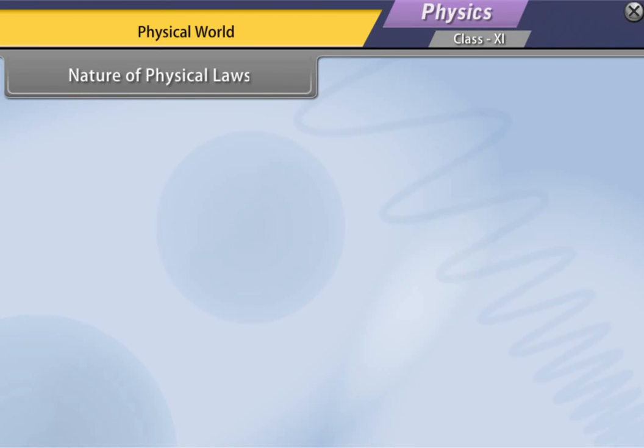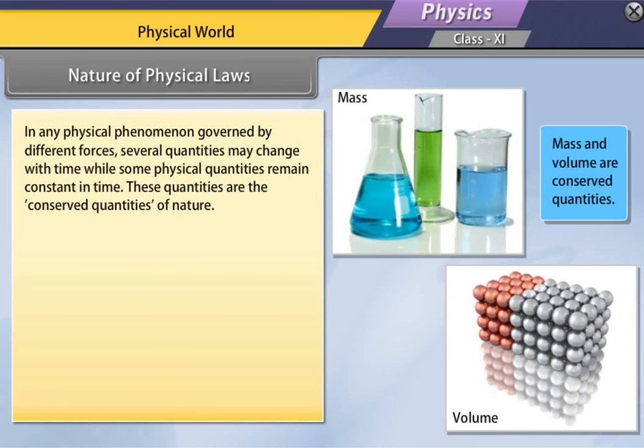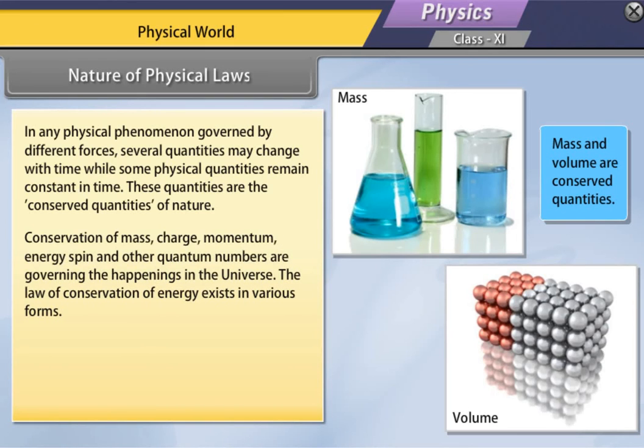Nature of physical laws. In any physical phenomenon governed by different forces, several quantities may change with time while some physical quantities remain constant in time. These quantities are the conserved quantities of nature. Conservation of mass, charge, momentum, energy, spin, and other quantum numbers are governing the happenings in the universe.